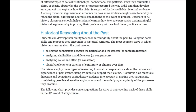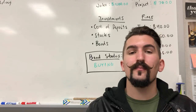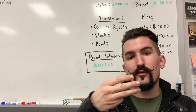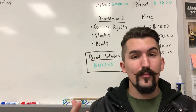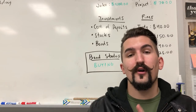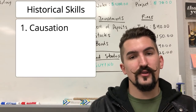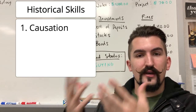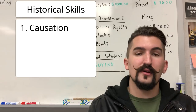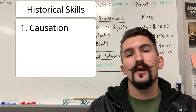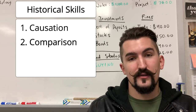Each type of essay will consist of one of three historical writing skills — and I'm talking here about the LEQ and DBQ. Those three historical skills that you're required to elaborate on are causation, which often asks for a cause and a series of effects or responses by people, as well as comparison.